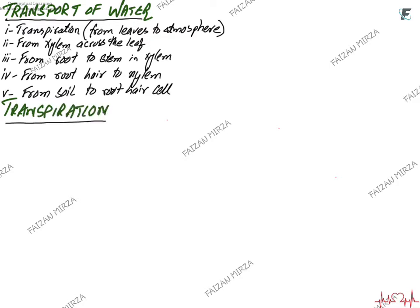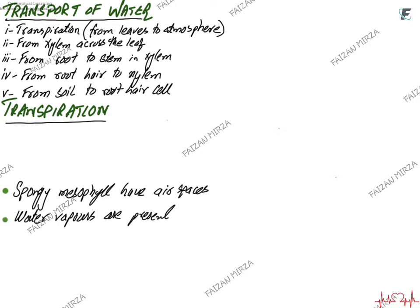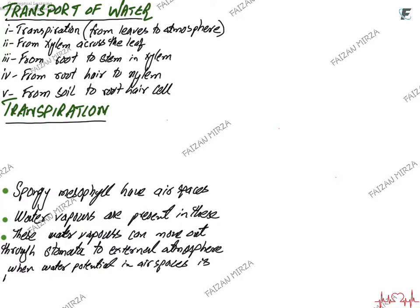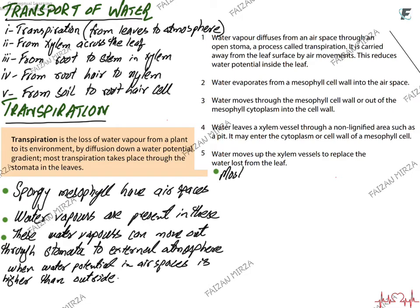In transpiration, spongy mesophyll cells have air spaces which allow water vapor present on the outer surface to go out through the stomatal pore. This is transpiration — water vapors moving out through the stomatal opening. Stomata are pores in the epidermis guarded by a pair of guard cells, and this is the only pathway connecting internal air with the external atmosphere. This happens when water potential in the air space is higher than outside. Transpiration is the loss of water vapor from a plant to its environment by diffusion down a water potential gradient.